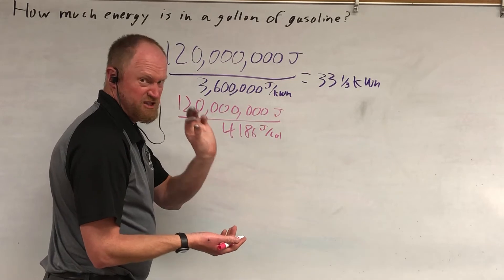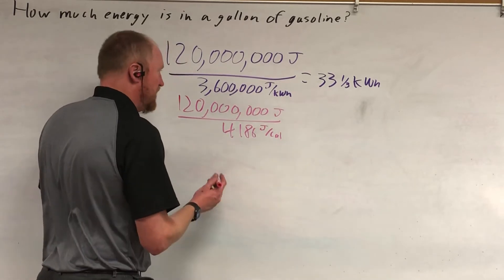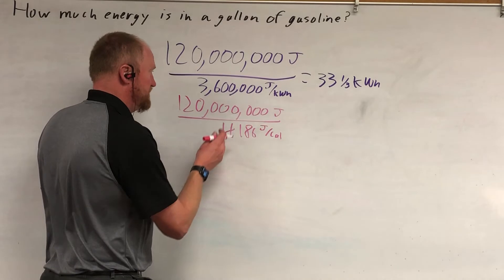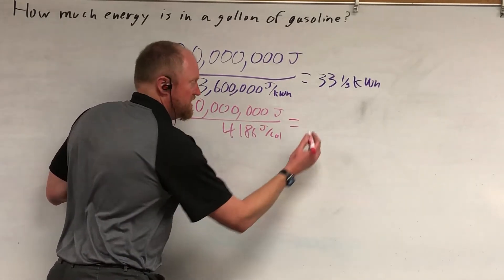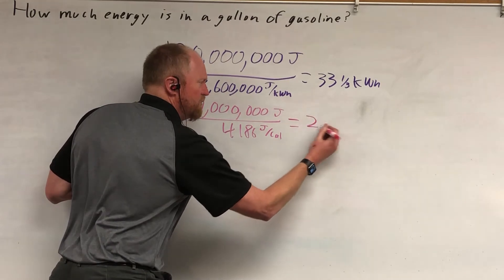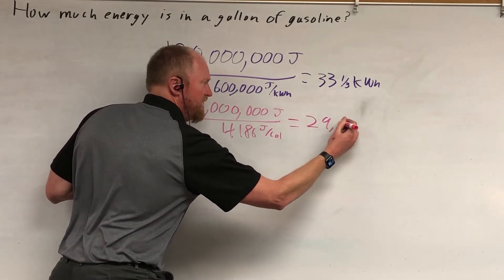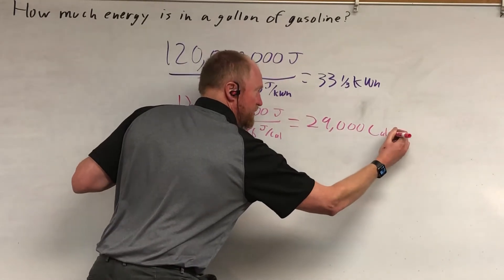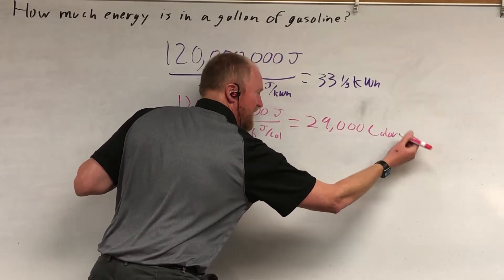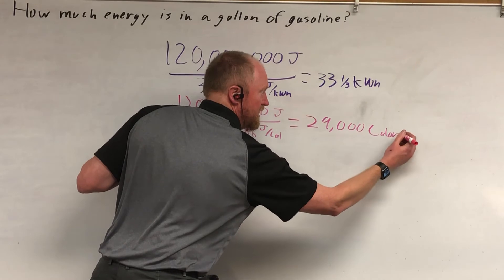the energy required to heat an entire liter, one degree, as opposed to a milliliter, one degree Celsius. So, divided by 4,186, and what you get is, it's 28, just rounded up, 29,000 dietary calories, or kilocalories. It's the calories that are on the back of your candy bar. Calories.